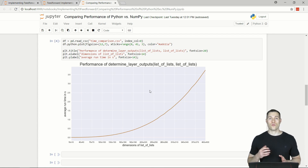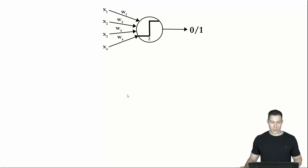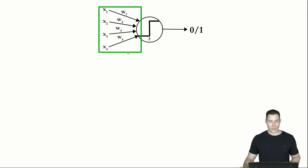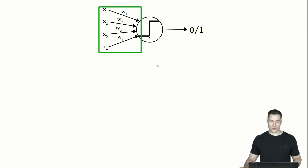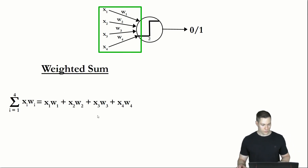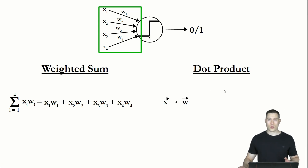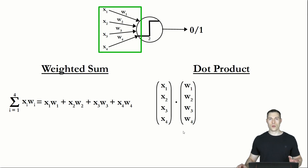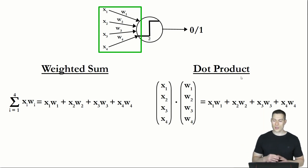So how do we solve this speed problem? Looking back at our neuron, specifically the part where we multiply input values by weights and sum them up — this weighted sum is exactly how the dot product is defined. The dot product is the product of two vectors. If those vectors contain our x's and w's, the dot product is calculated as x₁w₁ + x₂w₂ + … which is the same expression as our weighted sum. So the weighted sum and the dot product are equivalent.